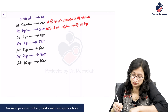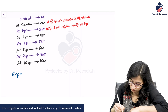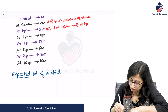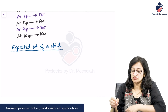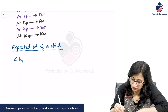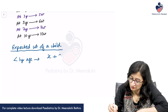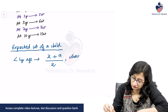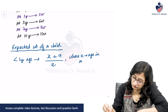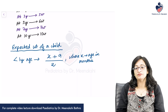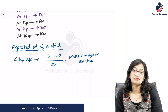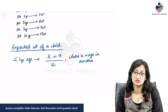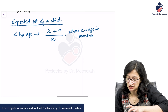The expected weight of a child less than 1 year of age is: (x + 9) / 2, where x is the age in months. So if the age of a child is 7 months, then the expected weight would be (7 + 9) / 2 = 16 / 2 = 8 kgs. That is how you can know the expected weight of a child less than 1 year of age.